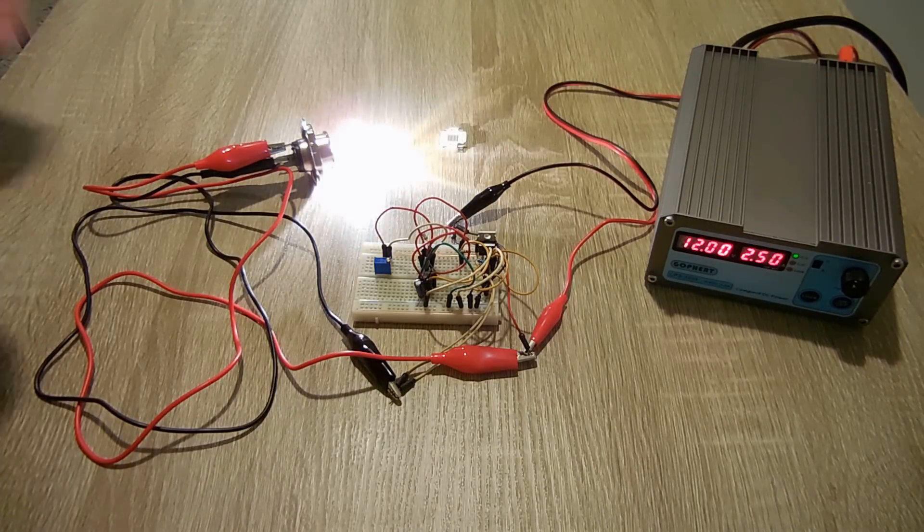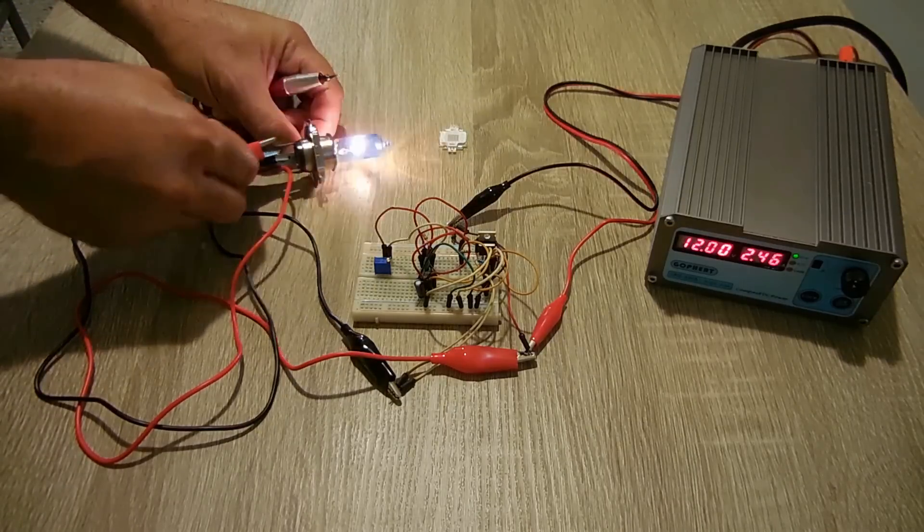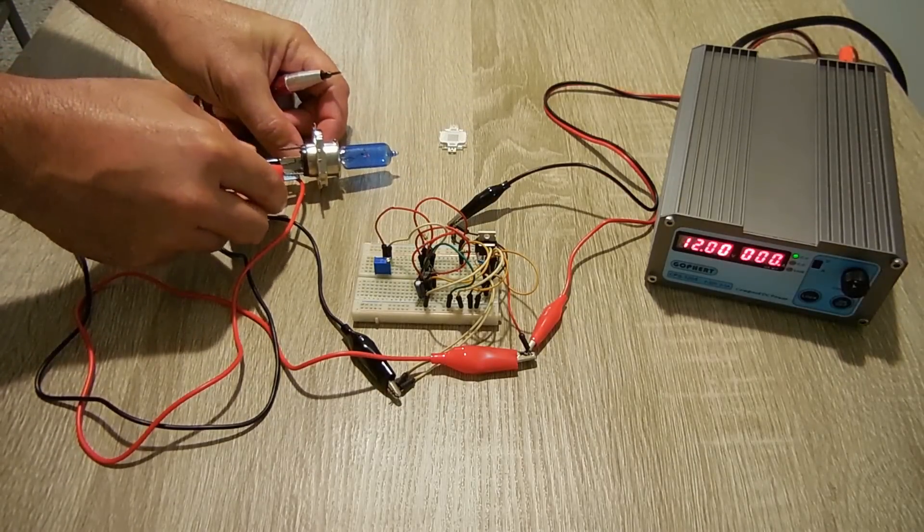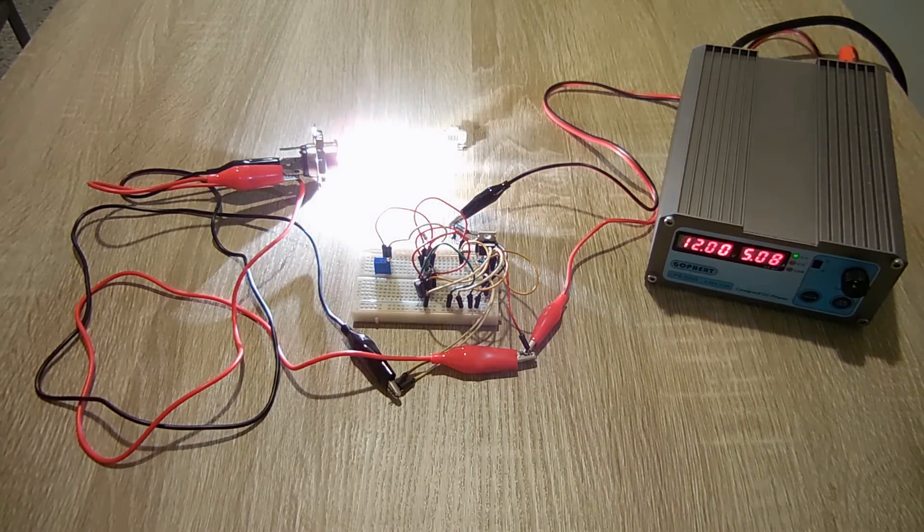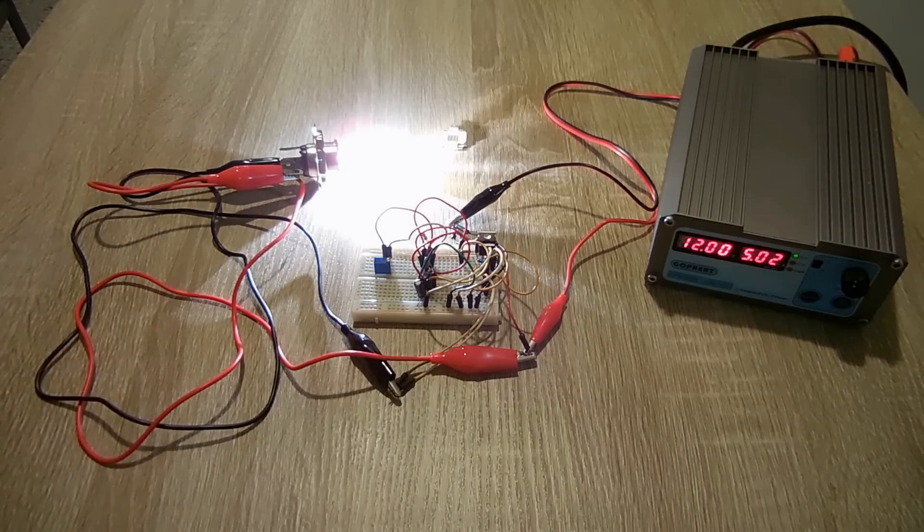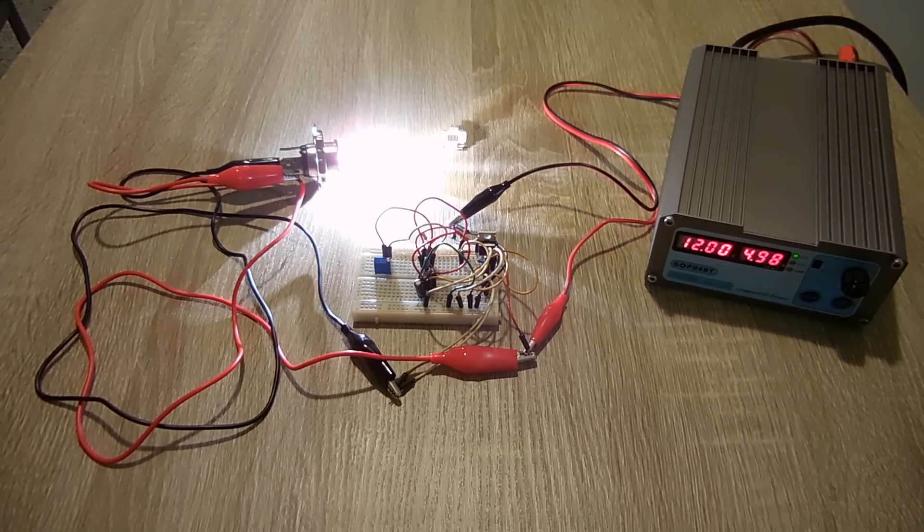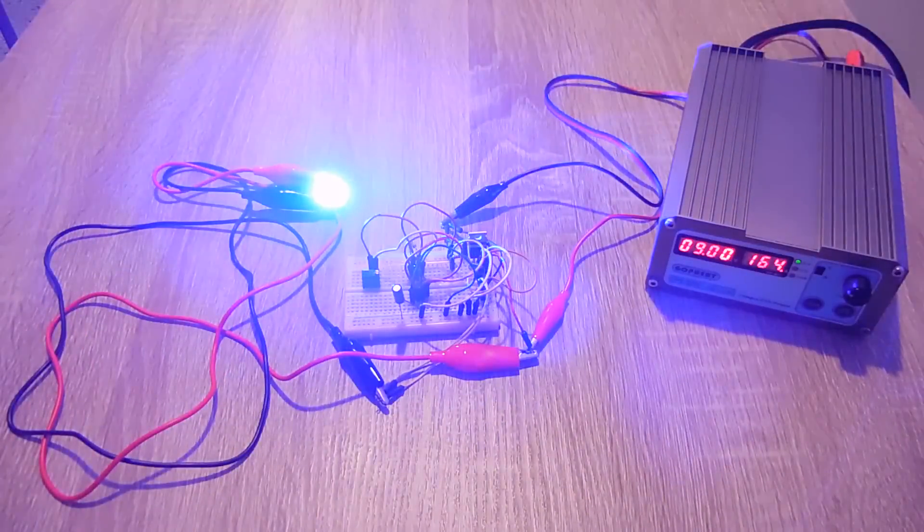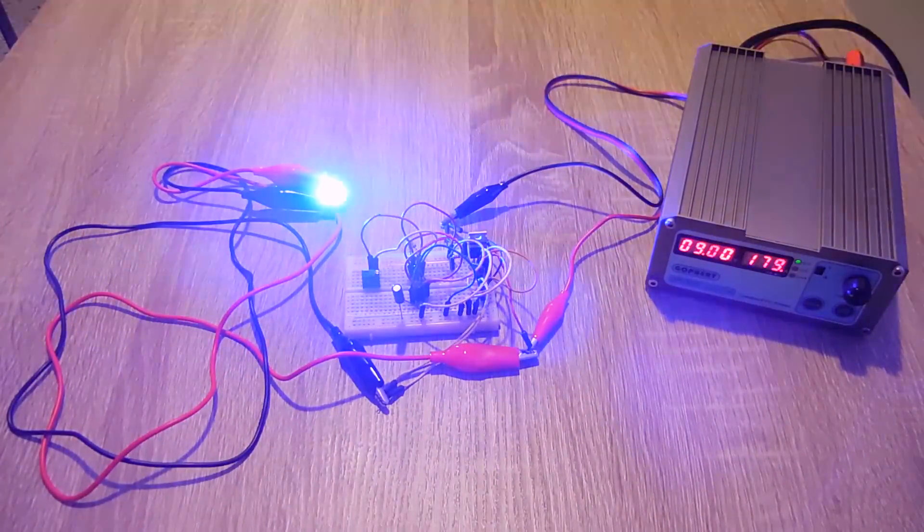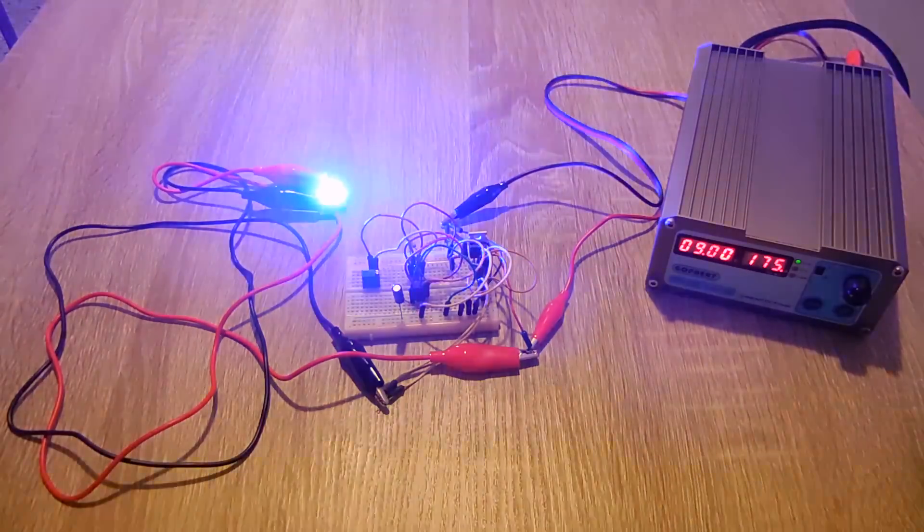Now let me switch this over to the higher current of the bulb. This is 5 amps. See over here, now pulling 5 amps. That 555 circuit, no problem at all controlling the 5 amp load. And the camera's probably missing a bunch of them, but it does work extremely well.